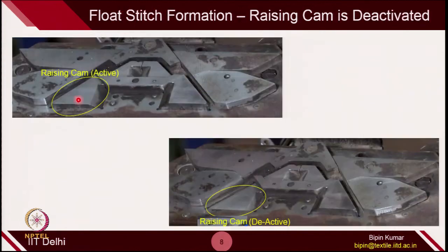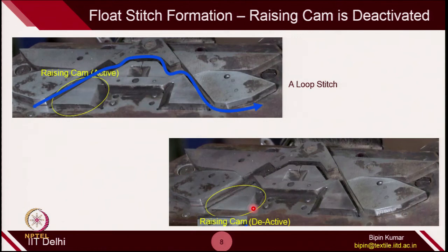In the case of float stitch, when the rising cam is in active position it will hit the needle butt and the path will produce a loop stitch. When the rising cam is in deactivated position — suppressed inside the metallic platform — the needle will not rise, the butt will simply move in a straight line, the needle remains idle on the bed, and in this case it makes a float stitch.